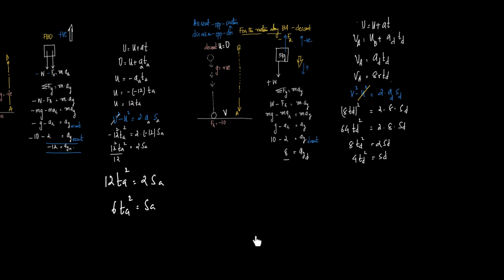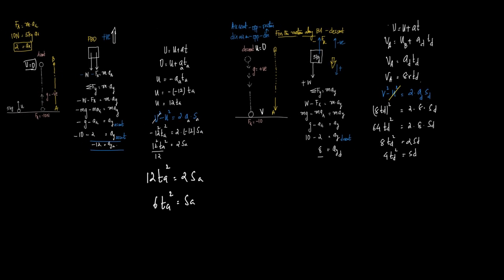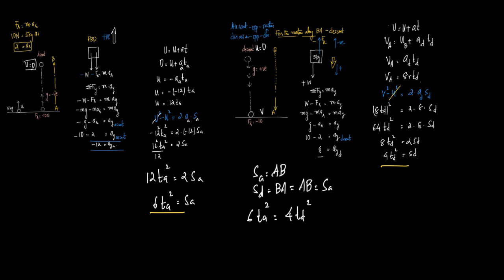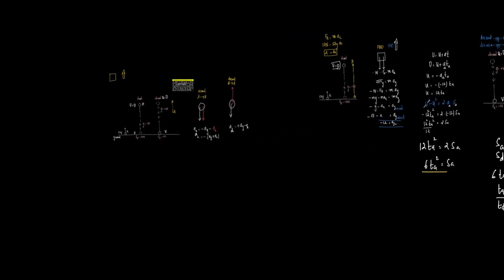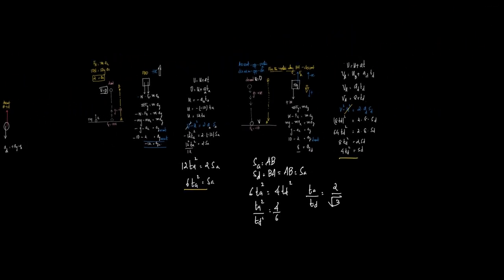Since SA = SD, we equate: 6·TA² = 4·TD². Therefore, TA²/TD² = 4/6 = 2/3, and TA/TD = 2/√3. The correct answer is the ratio of time of ascent to time of descent equals 2 : √3.